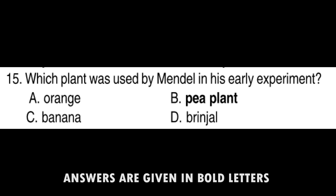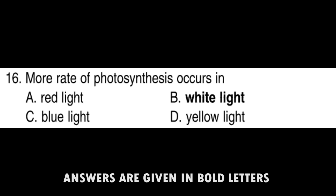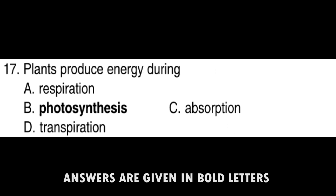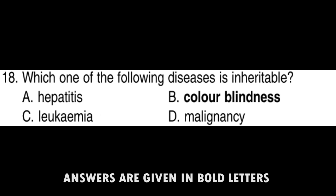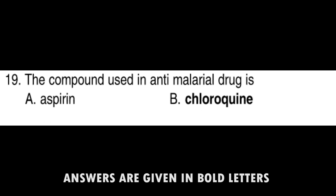Which plant was used by Mendel in his early experiment? Pea plant. More rate of photosynthesis occurs in white light. Plants produce energy during Photosynthesis. Which one of the following diseases is inheritable?